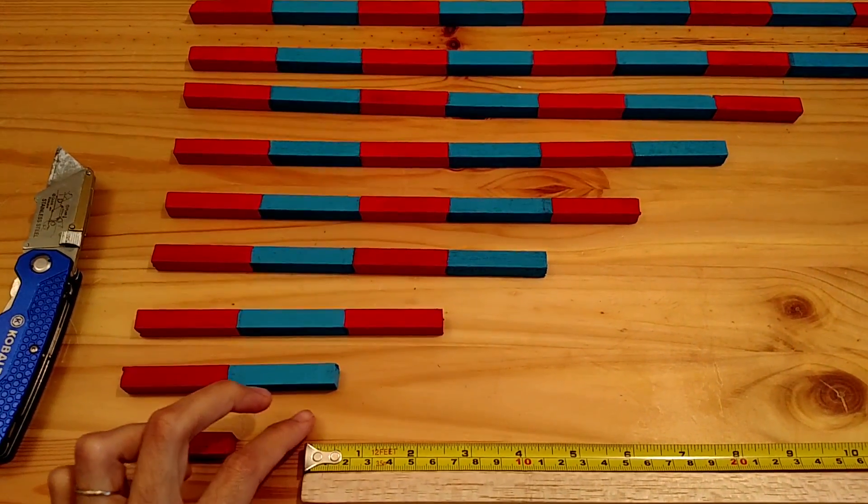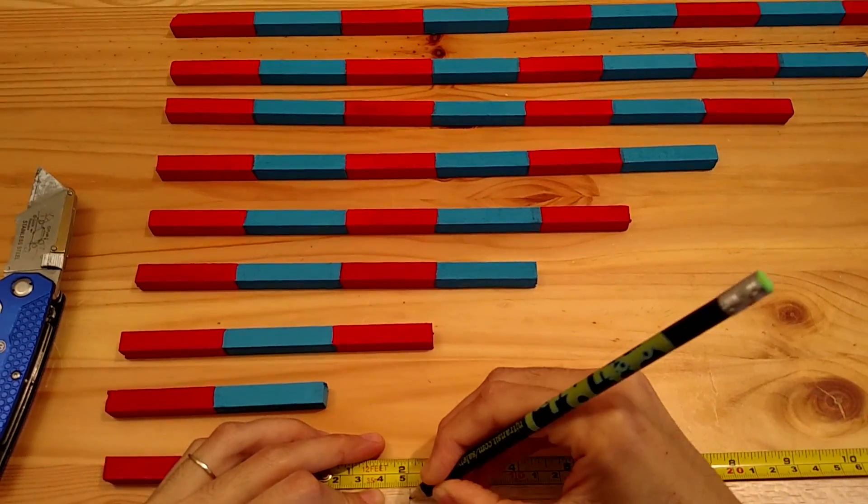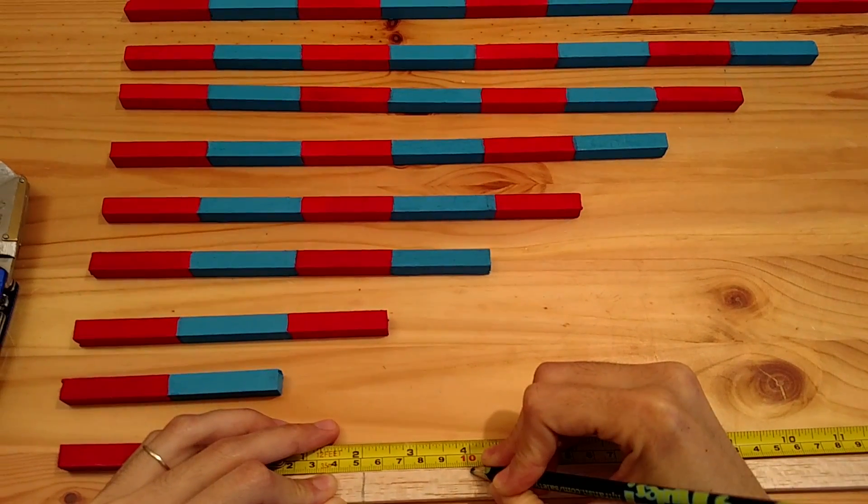You spread out the tape and then you mark two inches, mark two inches, and you keep marking two inches all the way down.